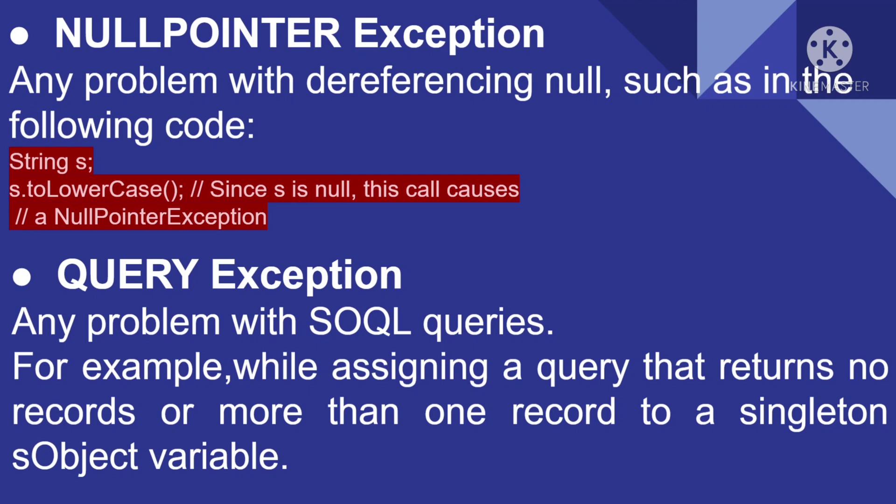Next, we have Null Pointer Exception. Any problem with dereferencing null will cause this. For example, if we are trying to lowercase a string variable `s` but haven't assigned anything to it, then `s` is null, and trying to call a method on it will throw a Null Pointer Exception.